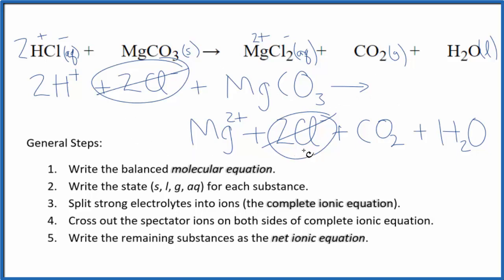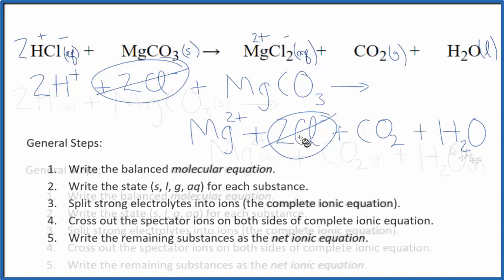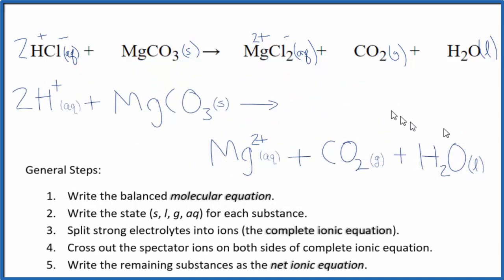I'll clean this up and add the states. So this is the balanced net ionic equation for HCl plus MgCO3.